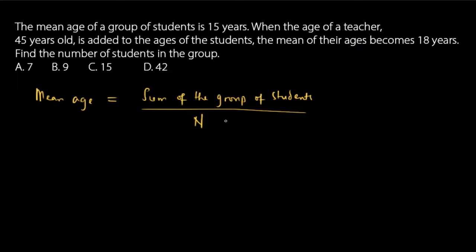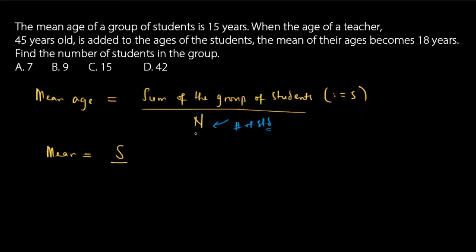The n here represents the number of students. We will let the sum of the ages of the group of students be denoted by s. So the mean is s divided by n. From the problem statement, the mean age is 15 years, so s divided by n equals 15. Let's call this equation one.